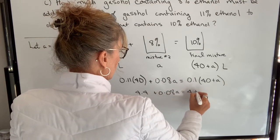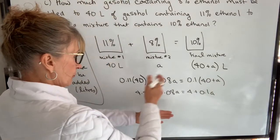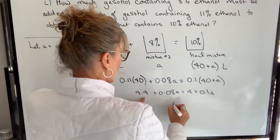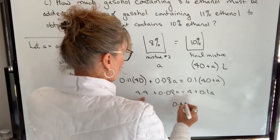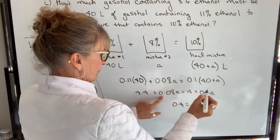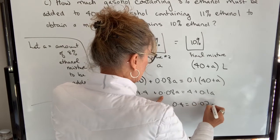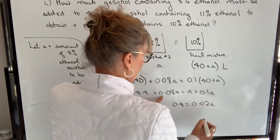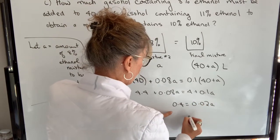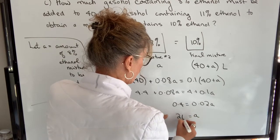Now we solve: 4.4 plus 0.08A equals 4 plus 0.1A. Moving terms around — subtract 4 from both sides to get 0.4, then subtract 0.08A from both sides to get 0.02A equals 0.4. Divide both sides by 0.02 and A equals 20.